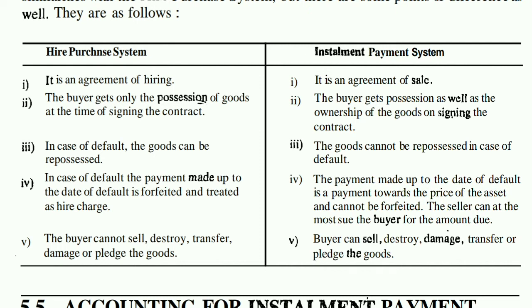In the Hire Purchase System, the buyer cannot sell, destroy, transfer, damage, or pledge the goods. In the Installment Payment System, the buyer can sell, destroy, damage, transfer, and pledge the goods.